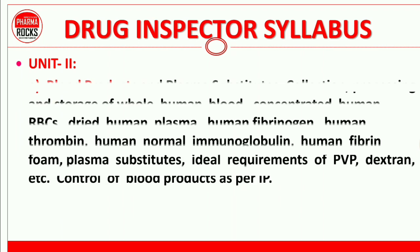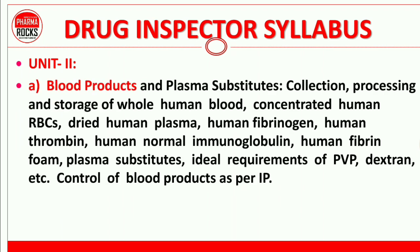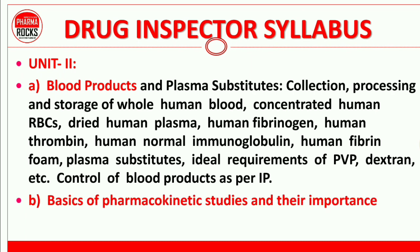In Unit 2, there are blood products and plasma substitutes: collection, processing, and storage of whole human blood, concentrated human RBCs, dried human plasma, human fibrinogen, etc. You also need to study the basics of pharmacokinetics and their importance.